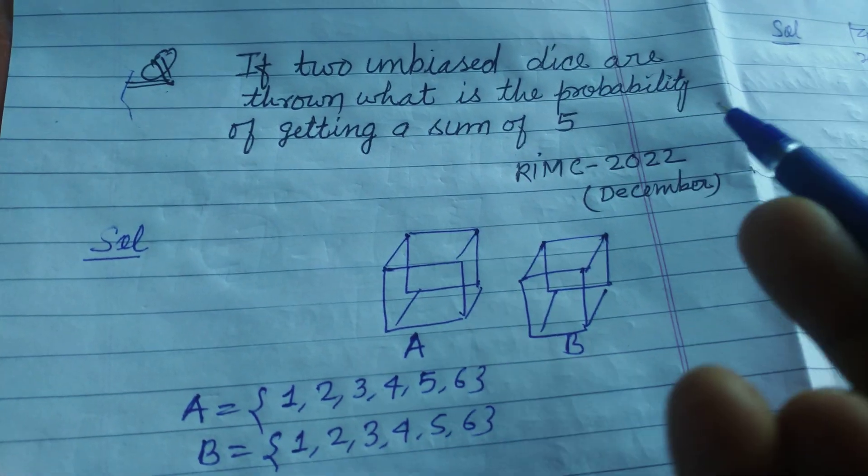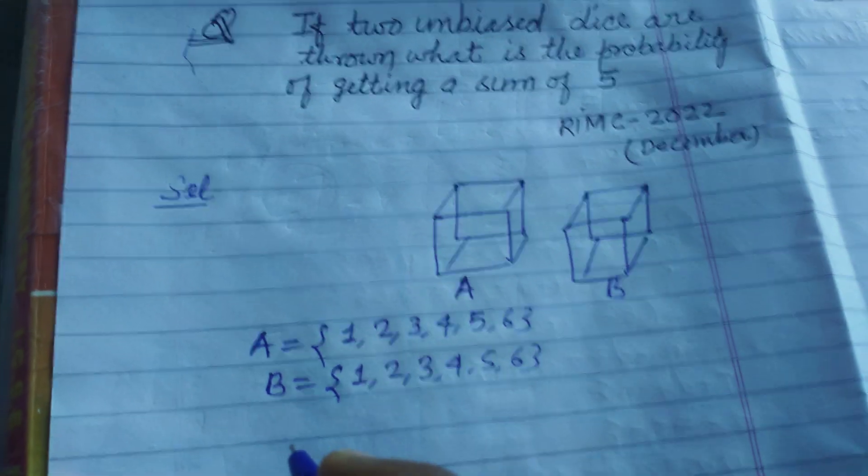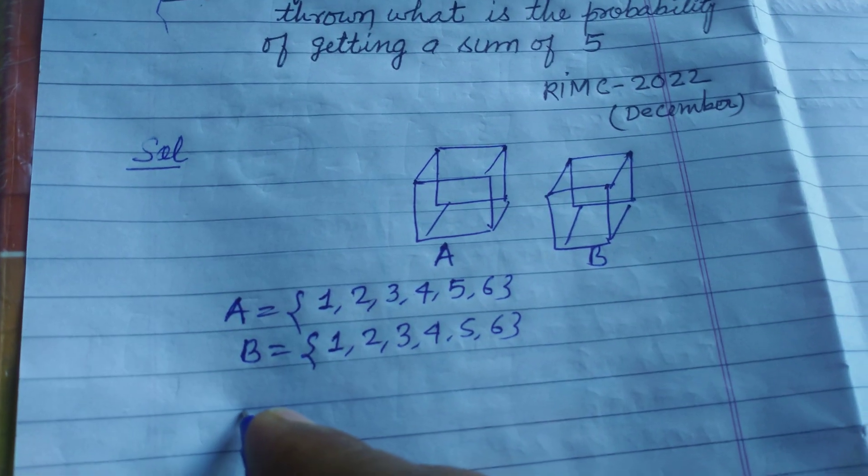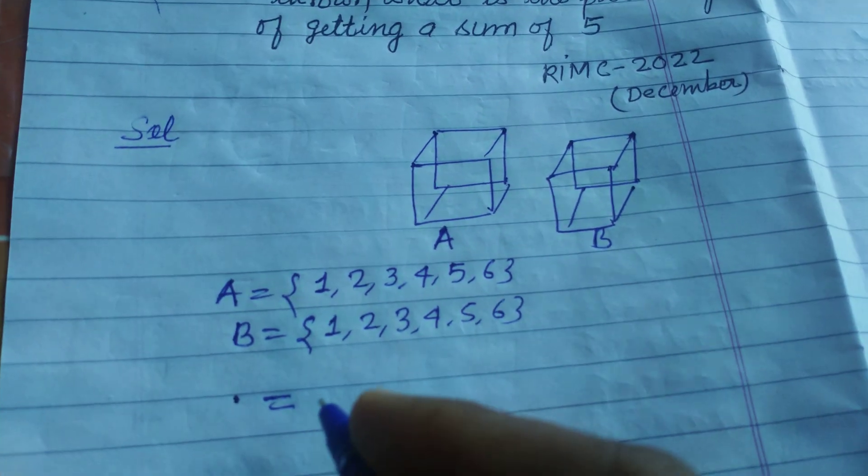We want to find out the probability of getting a sum of five. So here, we have the set of getting a sum of five.